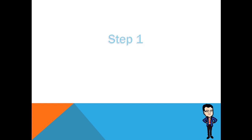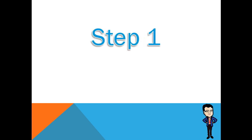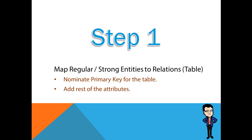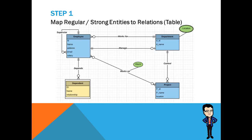Step one: mapping strong entity types. For each regular entity type on your diagram, create a table, nominate a primary key for the table, and add the rest of the attributes. Here we convert the employee, department, and project entities into tables, nominate a primary key for them, and add the rest of the attributes.